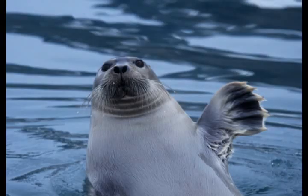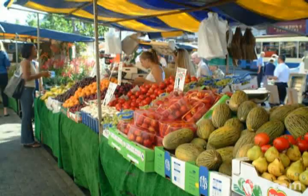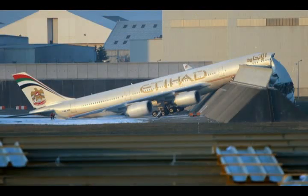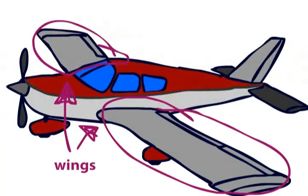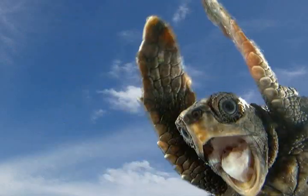Hello viewers. This episode will be looking at stalls. A stall in an aircraft is the point where the wing is no longer generating enough lift to keep the airplane up in the sky. This is somewhat undesirable.